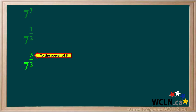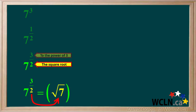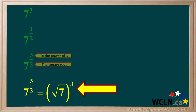The 3 on top of the fractional exponent means to the power 3, and the 2 on the bottom of the fractional exponent means the square root. So we'll write the square root of 7 and put brackets around it, then add the power of 3 outside the bracket. So 7 to the power of 3 over 2 can be written as the square root of 7 cubed.